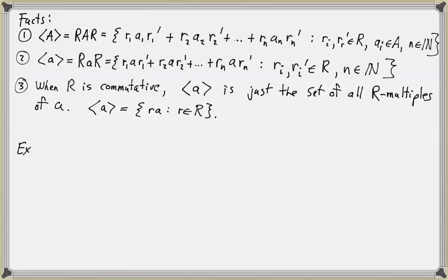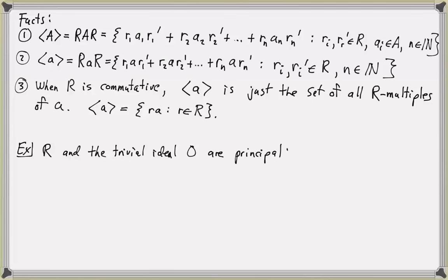As a quick example, the ring R and the trivial ideal {0} are principal ideals, because R is the ideal generated by 1, and {0} is the ideal generated by 0.